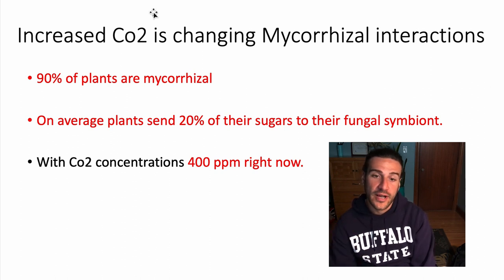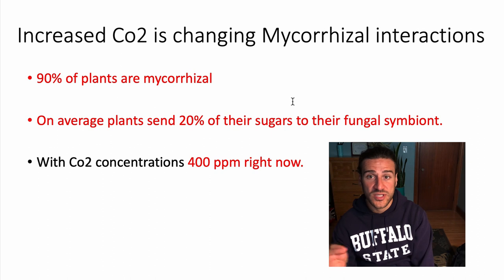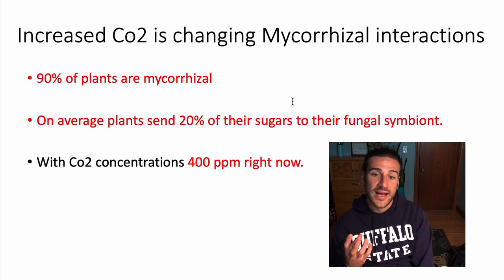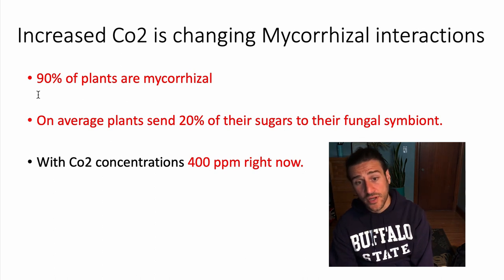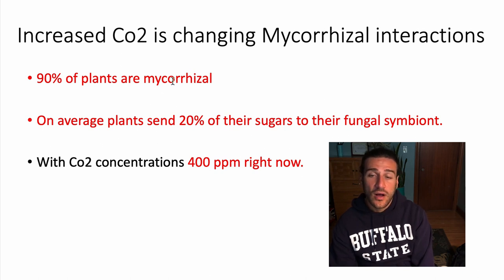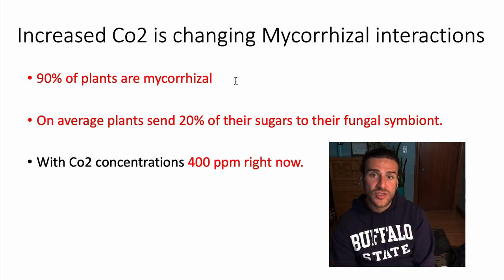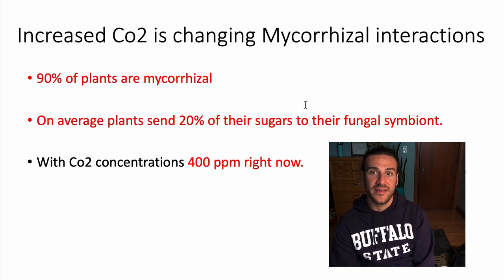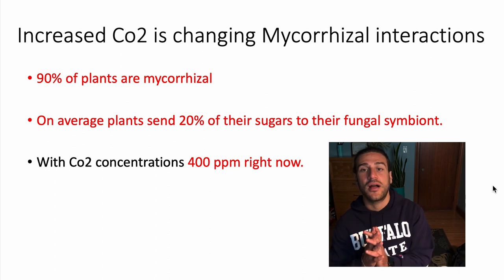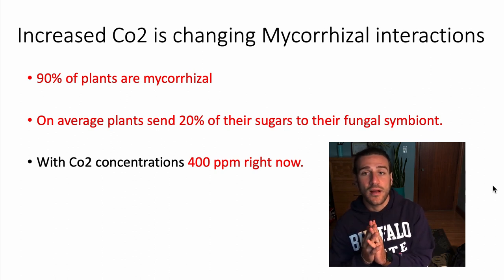90 percent of living plants have mycorrhizal associations — that is remarkable. Almost every plant you see forms a tight-knit relationship with symbiotic fungi. On average, 20 percent of the sugars that plants make are actually sent to their fungal symbiote. Imagine paying 20 percent of your income — that's an enormous amount of carbohydrates being sent underground.